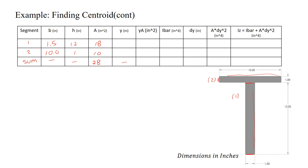The Y distance is measured from each segment's centroid to the reference axis. Segment one has Y = 6 inches; segment two has Y = 12 + 0.5 = 12.5 inches. Multiplying: 18 × 6 = 108 inches cubed, and 10 × 12.5 = 125 inches cubed. The sum of the Y·A values is 233 inches cubed.